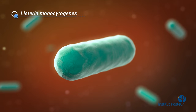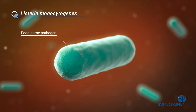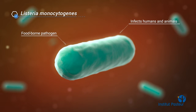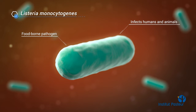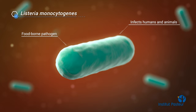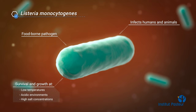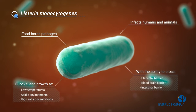Listeria monocytogenes is a well-known food-borne pathogen that can infect both humans and animals. Its characteristics make it a unique model in infection biology. Indeed, it can survive and grow in a wide range of conditions and can cross different host barriers.